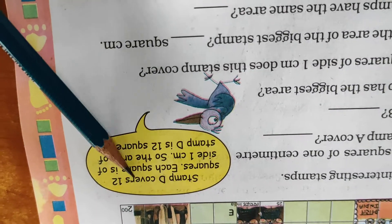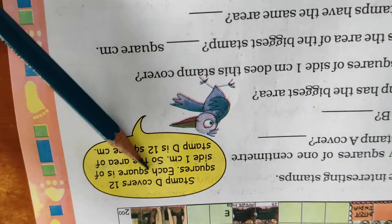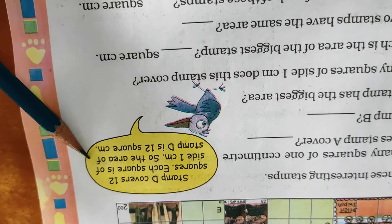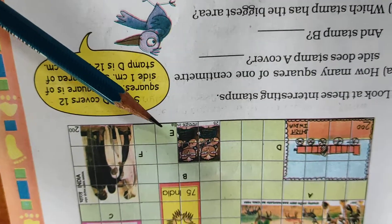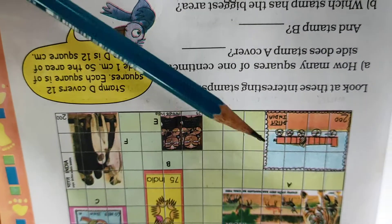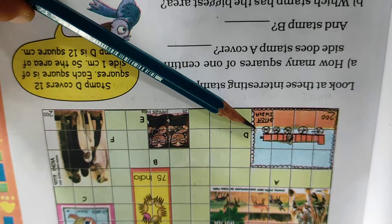Now see here stamp D covers 12 squares. Each square is of side 1 cm. So the area of stamp D is 12 square cm. So D, 12. Already we calculated.